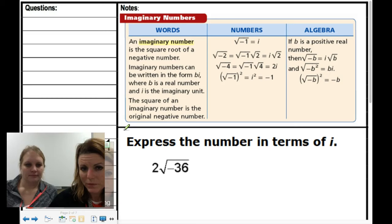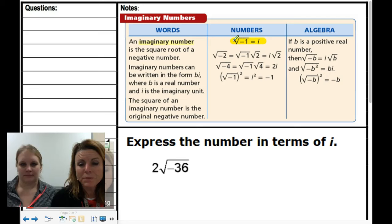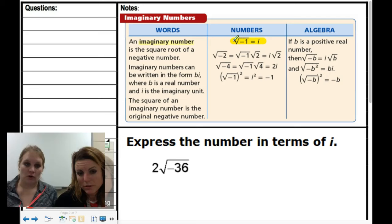An imaginary number is the square root of a negative number. Because you can't really take the square root of a negative number, whenever you have a negative under a square root sign, it means you're going to have an imaginary number. A lot of you are going to grab those calculators and type in square root of negative whatever, and you're going to get an error. Can't use your calculators on these.